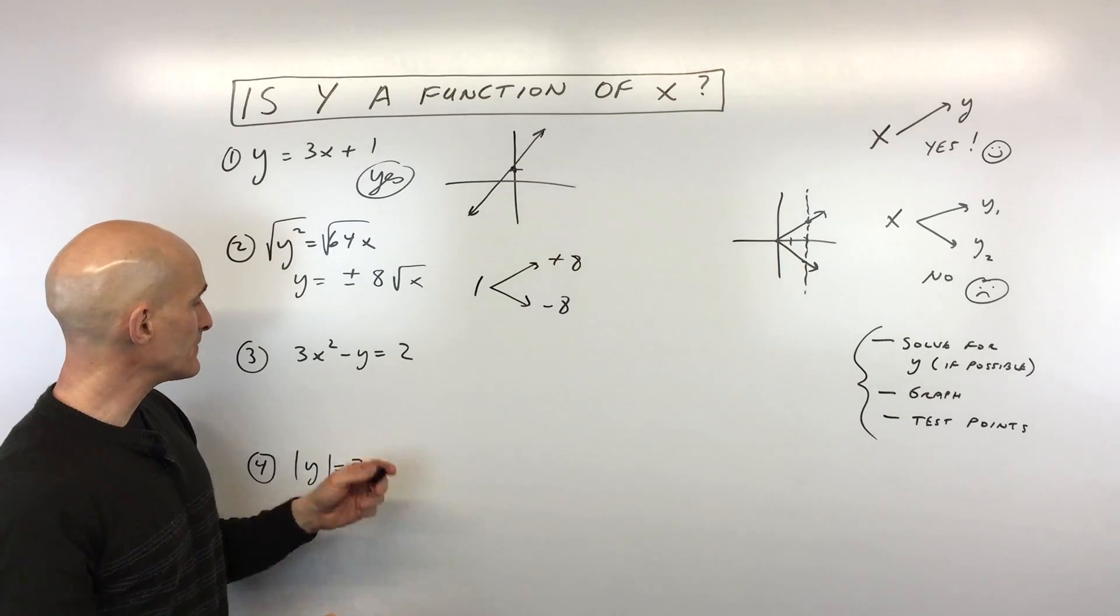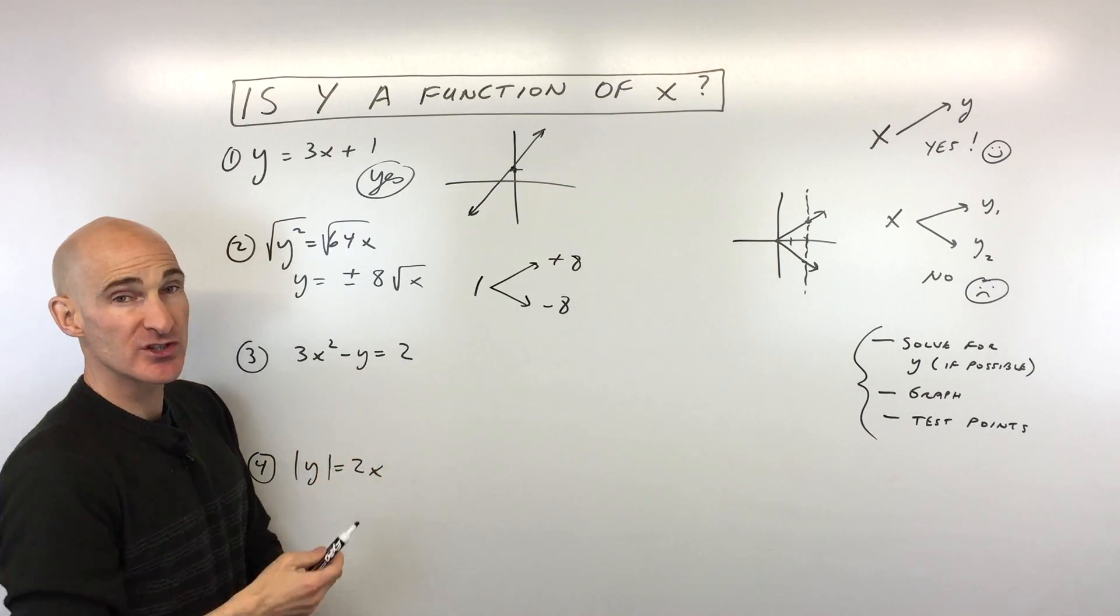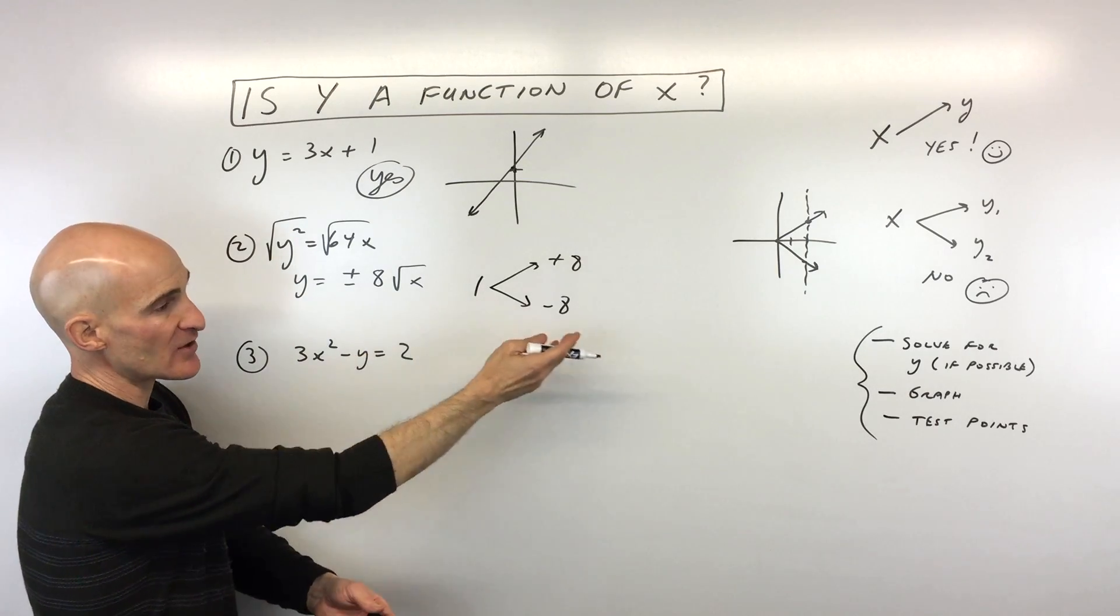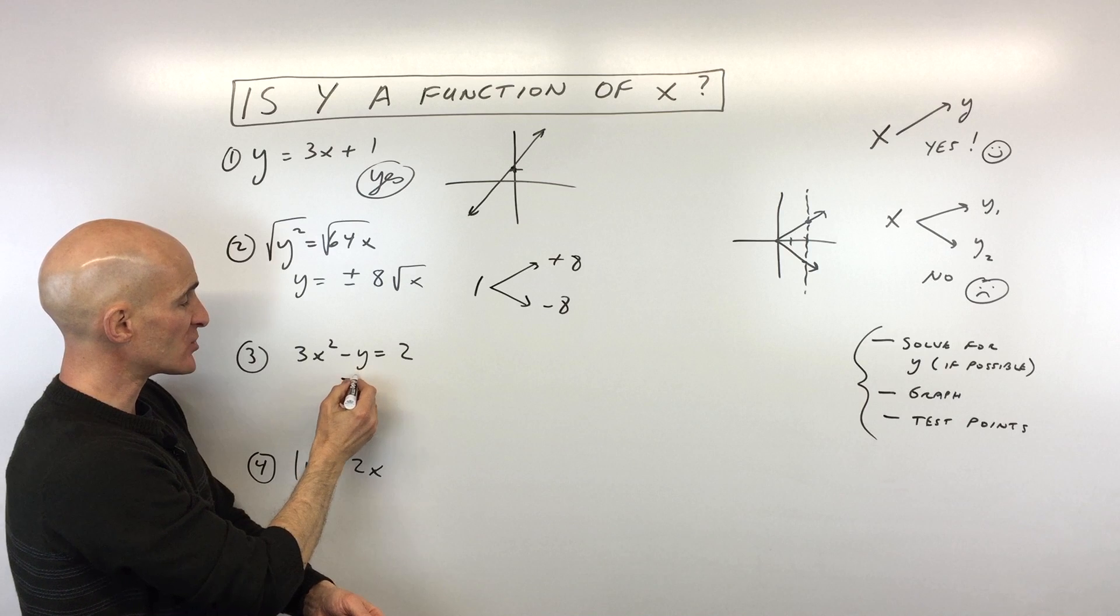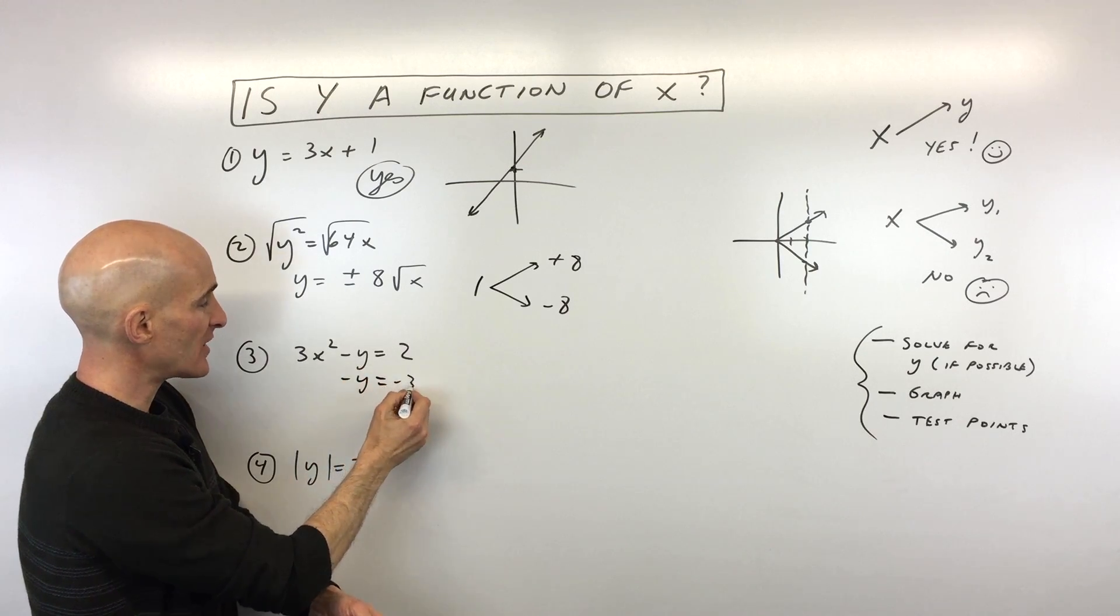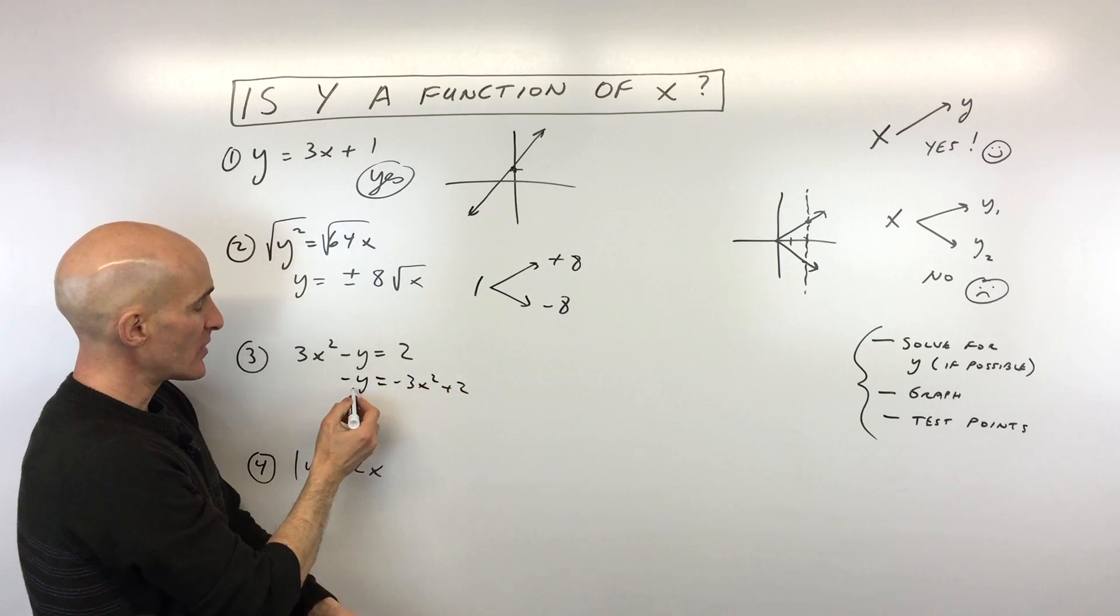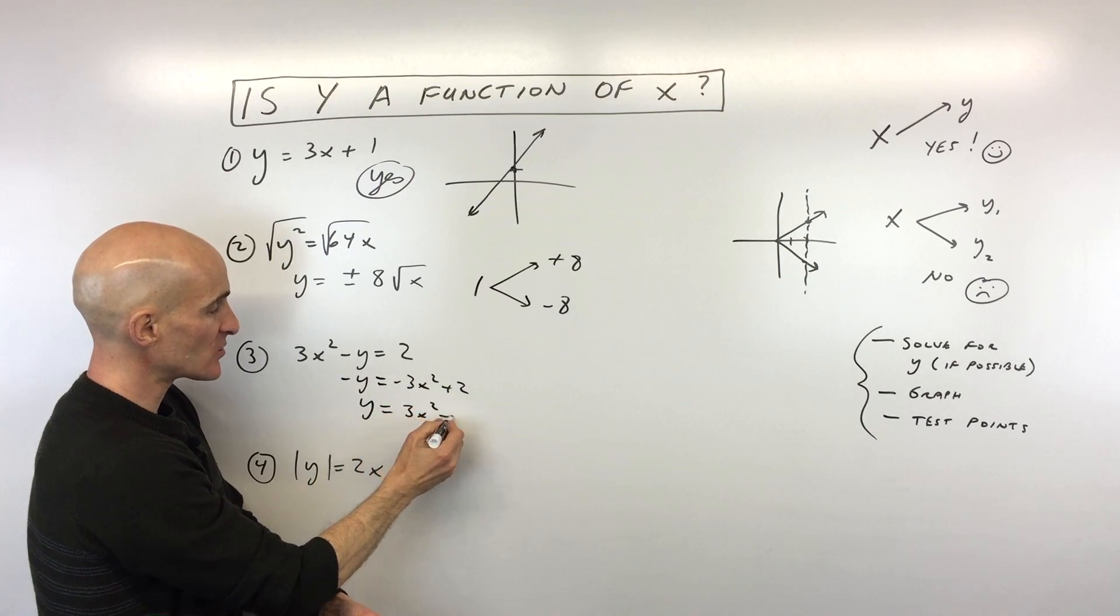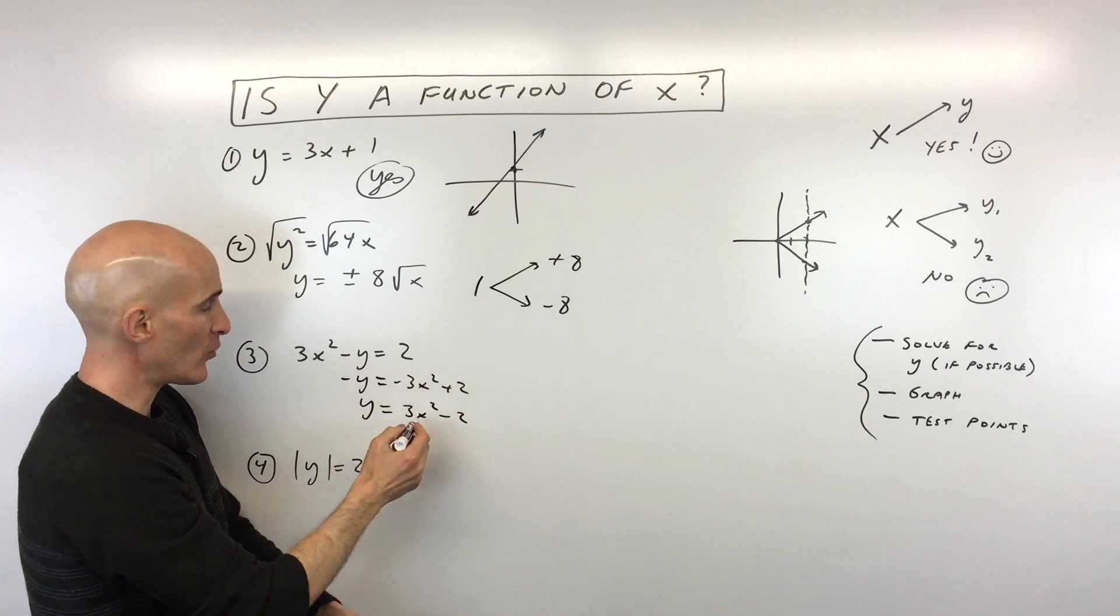Okay, let's look at number three. This one, we've got 3x squared minus y equals 2. So, again, what we can do here is test out some points. But what I like to do is try to solve for y, try to get that y by itself. So here we're going to multiply everything by negative 1 just to solve for positive 1y. That's going to be y equals 3x squared minus 2. Everything multiplied by negative 1, right?